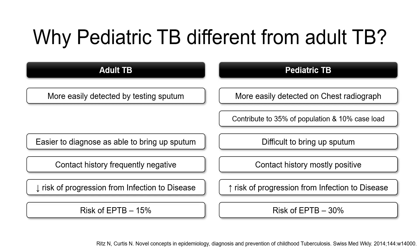Pediatric TB is more easily detected on a chest radiograph, so the main diagnosis depends on the chest radiograph, while adult TB is more easily detected by sputum testing. Pediatric patients are very small, so it is very difficult to bring up sputum — they don't cooperate much, and even if they cooperate, they are not able to bring up an adequate amount of sputum for smear examination. Adult patients, on the other hand, very easily bring up sputum for smear examination.